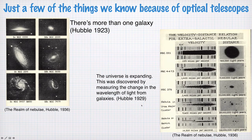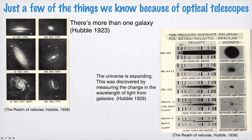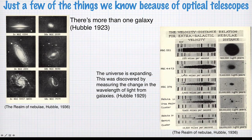Another thing that Hubble discovered was that the universe is expanding. Here are some images he took of objects at different distances — from 900,000 light years through to 135 million light years away. What you see is that the further things are away, the faster they're moving. He can tell by looking at a particular spectral line — these are spectra, and this line corresponds to a particular line in the calcium spectrum. As you go further in distance, this dot moves further and further to the right, indicating an increase in redshift, which indicates an increasing velocity away from us. This was an important discovery in 1929.